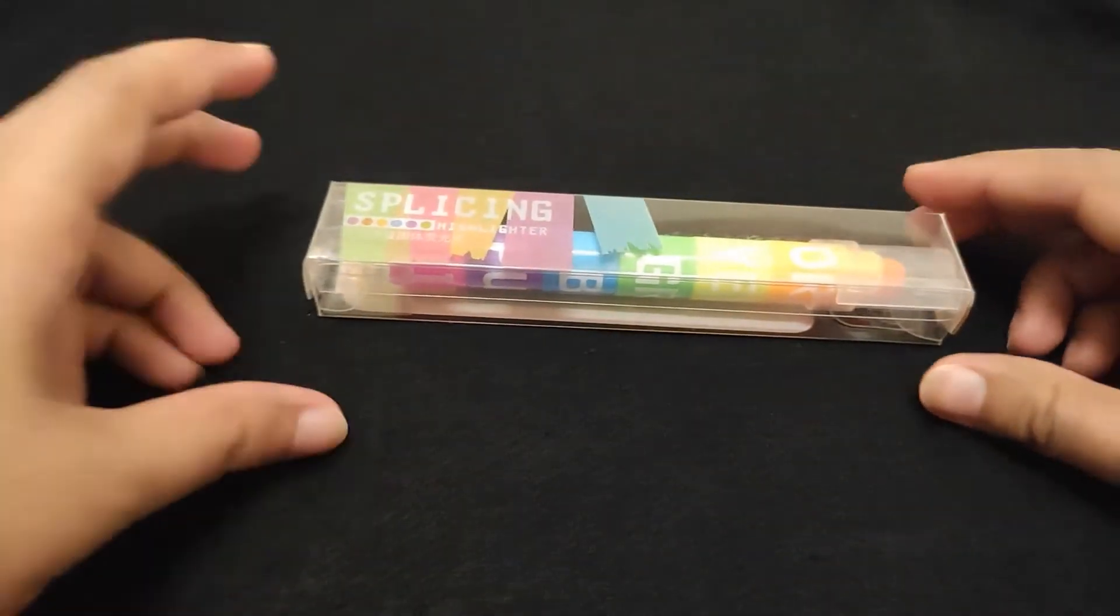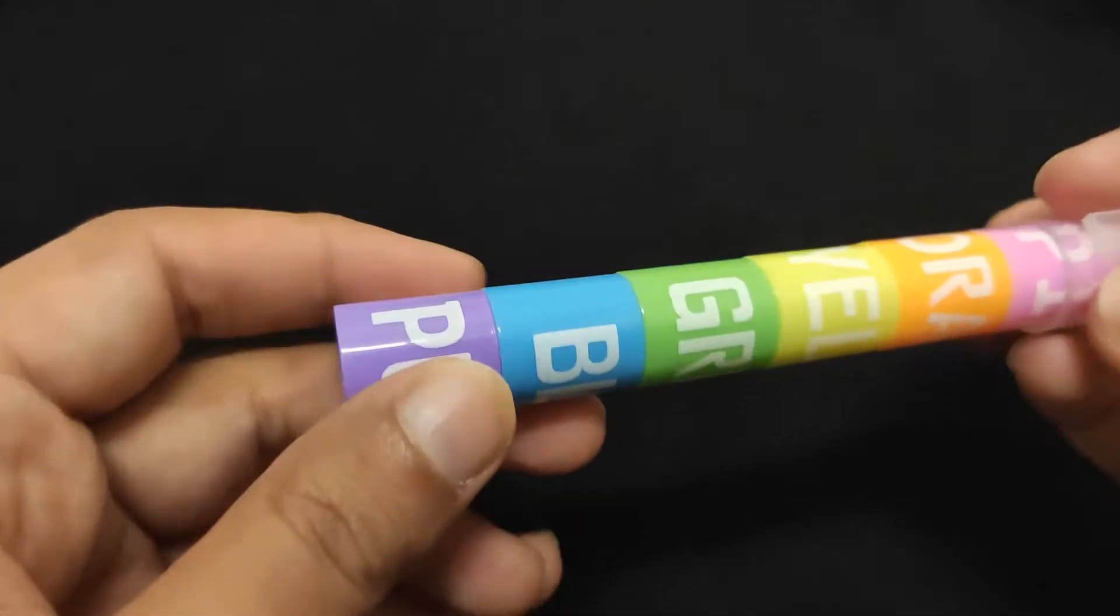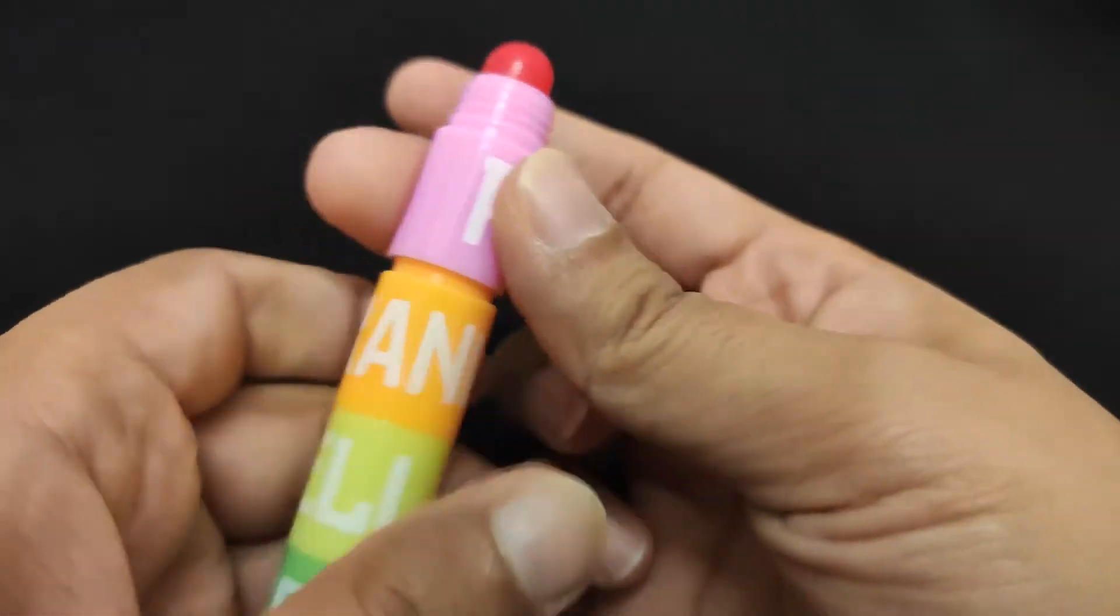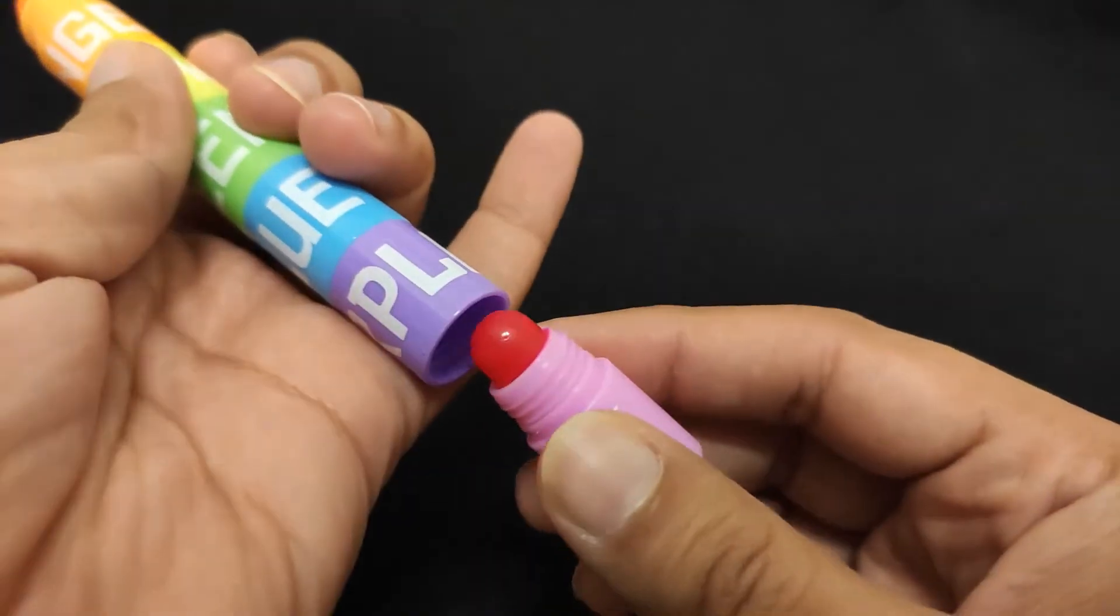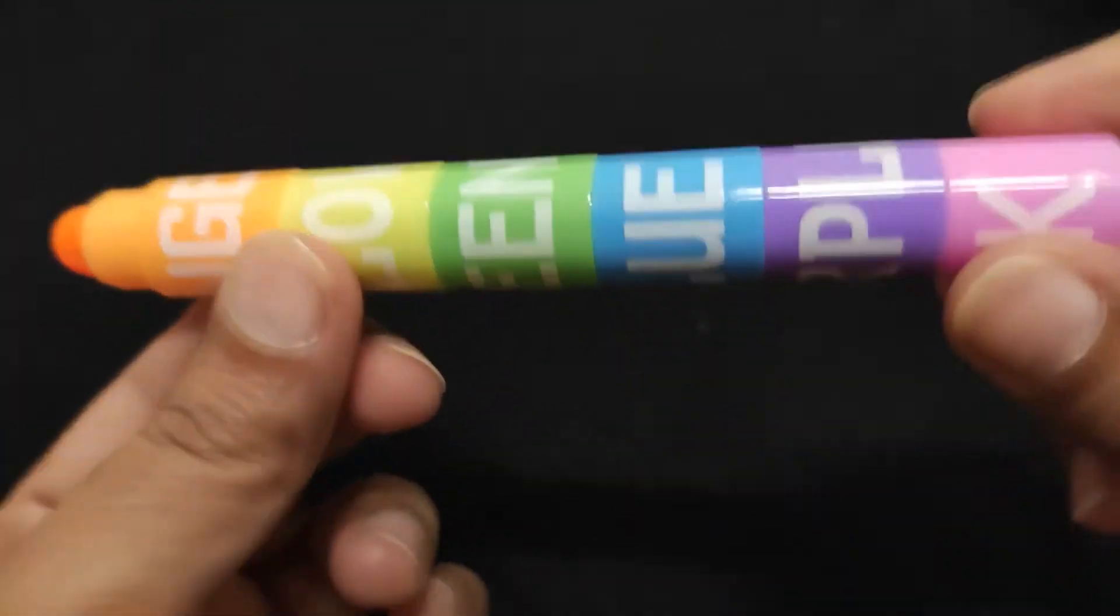Next up is this one. So this is a highlighter. This highlighter has actually six colors and you take the cover off and you want to use for example this orange color. You can take the first one. Look, you have six highlighters all in one.